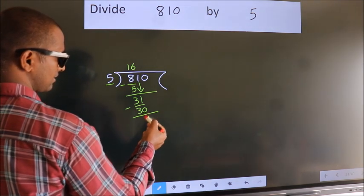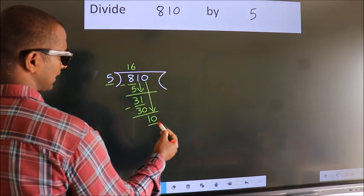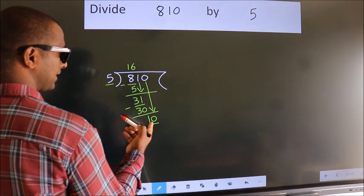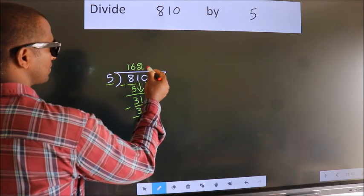After this, bring down the beside number. So, 0 down, giving us 10. When do we get 10 in the 5 table? 5 times 2 is 10.